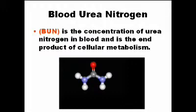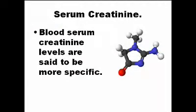Blood urea nitrogen, also called BUN, is the concentration of urea in the blood. It is similar to creatinine and is another important laboratory test to know how well the kidneys are cleaning the blood. When urea is elevated, the kidneys are not working well. Serum creatinine is the concentration of creatinine in the blood, also useful for calculating creatinine clearance.